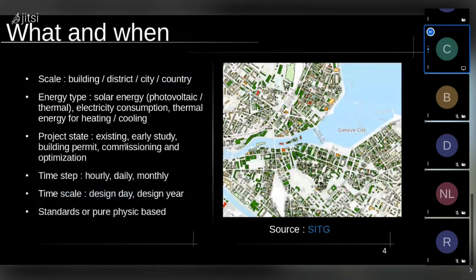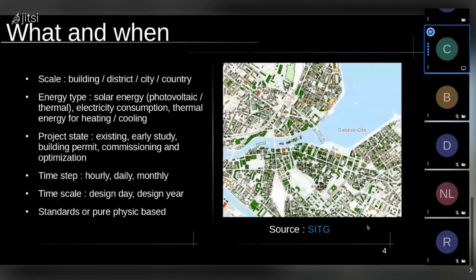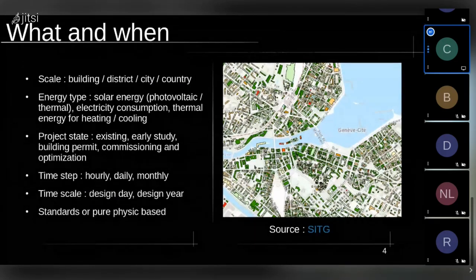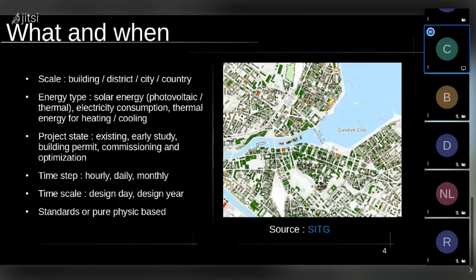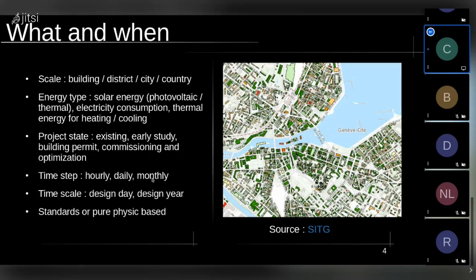Another topic to understand why it is not solved yet is what and when. This picture shows all the energy consumption of all the buildings in Geneva. There is a website where you can see on a map all the consumption — in green when a building has low enough consumption according to state goals, and in red when it's really too much. You can also analyze solar energy, and there are many types of energy.